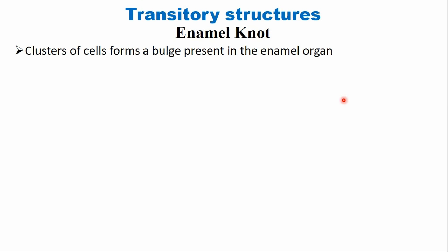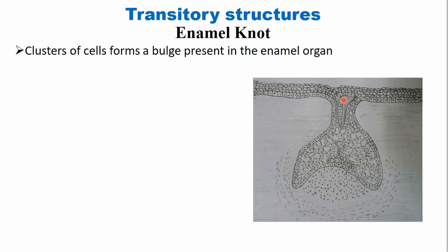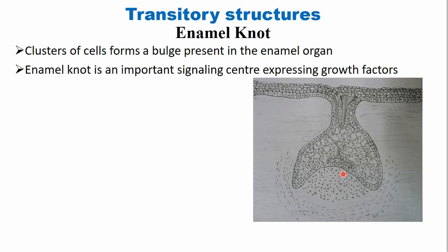Another structure is the enamel knot. Enamel knots are clusters of cells that form a bulge present in the enamel organ near the inner enamel epithelium. These clusters of cells may act as a signaling center, expressing certain growth factors that help in the transformation of cap into bell stage. Enamel knots are usually present at the incisal edge or the cusp tip.